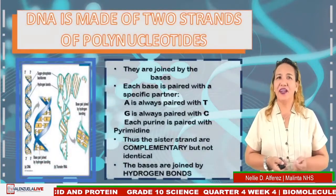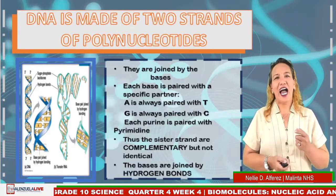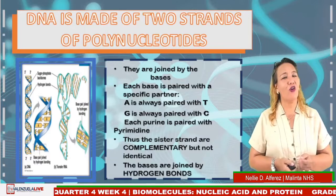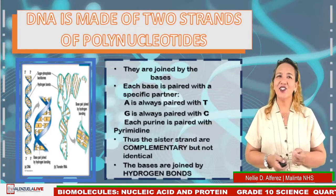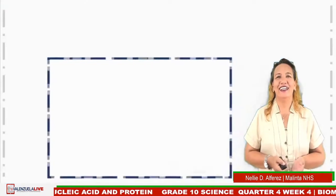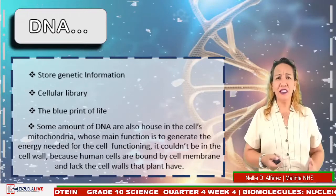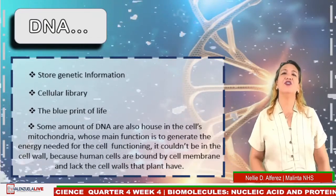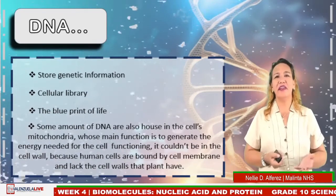DNA is made up of two strands of polynucleotides joined by bases. Each base is paired with a specific partner: adenine is always paired with thymine, and guanine is always paired with cytosine. Purine is paired with pyrimidine, so the sister strands are complementary but not identical. The bases are joined by hydrogen bonds. DNA stores genetic information and serves as the cellular library — the blueprint of life. Some DNA is also housed in the mitochondria, whose main function is to generate energy needed for cell functioning.